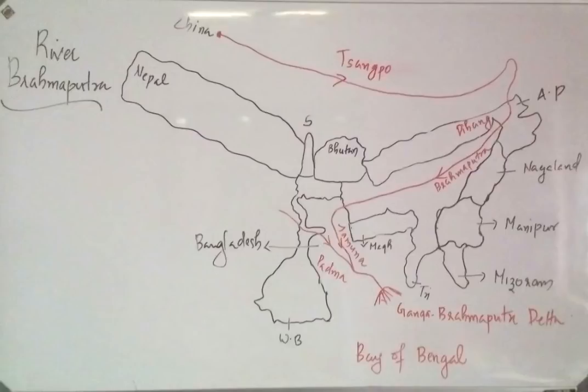Now let us introduce the Brahmaputra River's statistics. The total length of the Brahmaputra River is 2,900 km. In India, the length within Indian territory is 916 km, and the overall total is approximately 2,880 to 2,900 km.